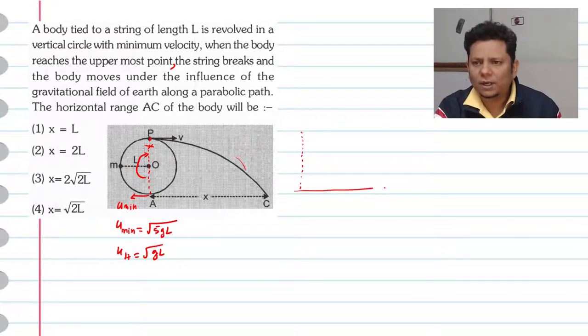The initial horizontal velocity U is under root GL.